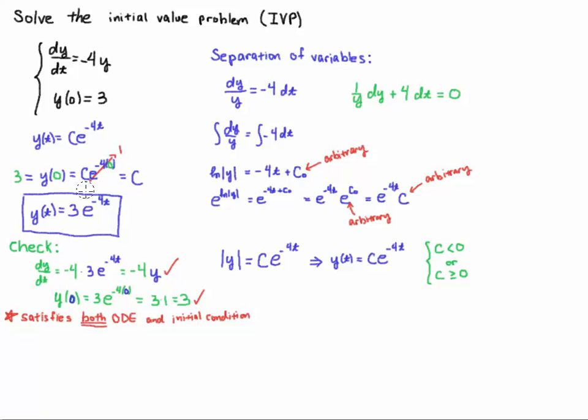By construction it has to be 3 but let's just go through it. y of 0 I plug in 0 for the exponential e to the 0 is 1 so I have 3 times 1 is equal to 3 so it does satisfy the initial condition as well. Remember whenever you check your answers with initial value problems you want to satisfy both the ODE and the initial condition.